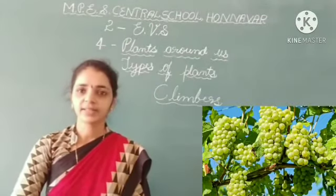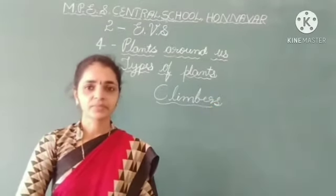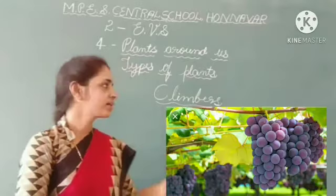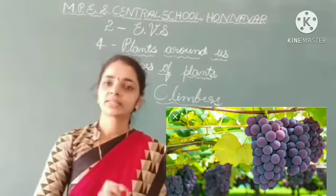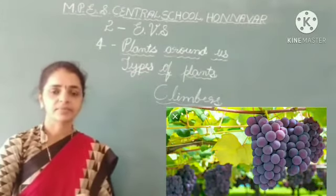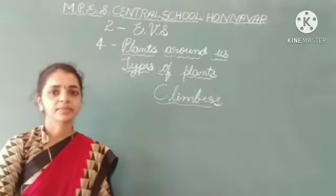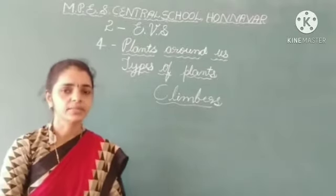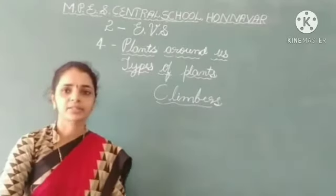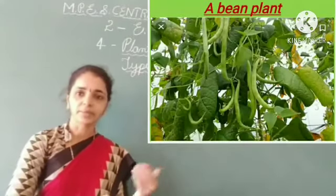Do you know about grapes? There are two types of grapes — green grapes and black grapes. Which type of plant is it? That is a climber. Some plants cannot stand up like trees; they need help to stand straight. They have weak stems. These types of plants are called climbers. For example, a grapevine, a bean plant and a pea plant.